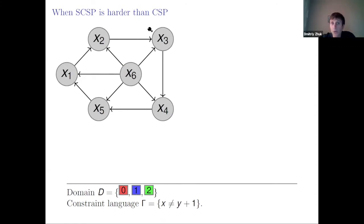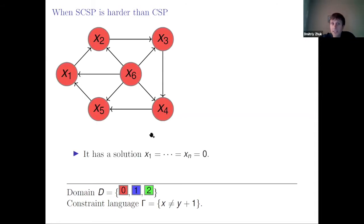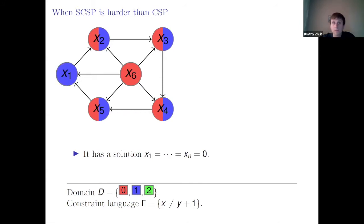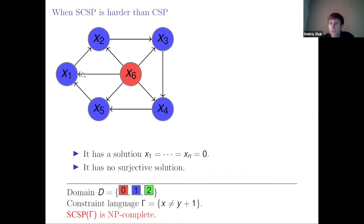Now I want to show an example when surjective CSP is harder than CSP. On a three-element domain zero, one, two, with just one predicate X ≠ Y+1, this predicate is not symmetric so we draw a directed graph. CSP over this language is trivial because we can always say yes — the trivial solution is zero, zero, zero. But it is NP-hard to check whether we have a surjective solution, since this instance does not have one. So it is easy to check for a solution, but NP-hard to check for a surjective solution.